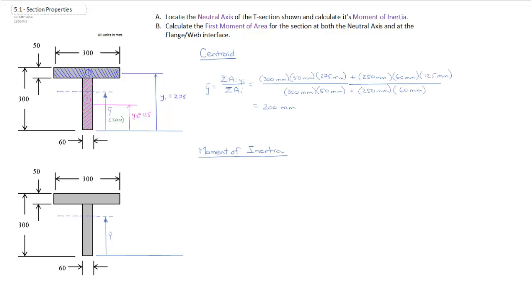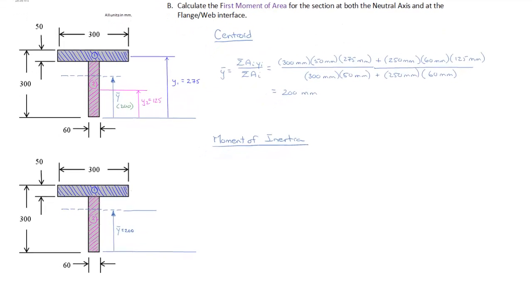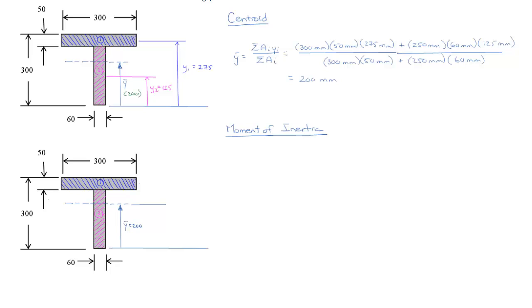However, we are going to use the same area sections - section 1 and section 2, the flange and the web like we did before. So I'm just going to add those in there now. We've hatched out our two areas that we're going to use to build up our section.